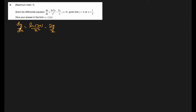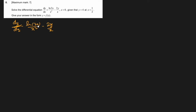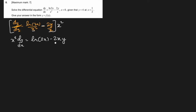To solve this differential equation, dy and dx must both be in numerator positions with their respective variables. The problem is the negative term, so we cannot simply cross-multiply. Instead, multiply the whole equation by x²: x² dy/dx = ln(2x) - 2xy. Rearranging to the left side: 2xy + x² dy/dx = ln(2x).